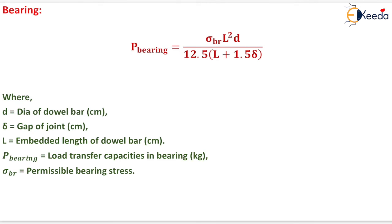P_bearing is the load transfer capacity in bearing in kg, and σ_br is the permissible bearing stress. That is all about the design of dowel bars. Thank you very much, students.